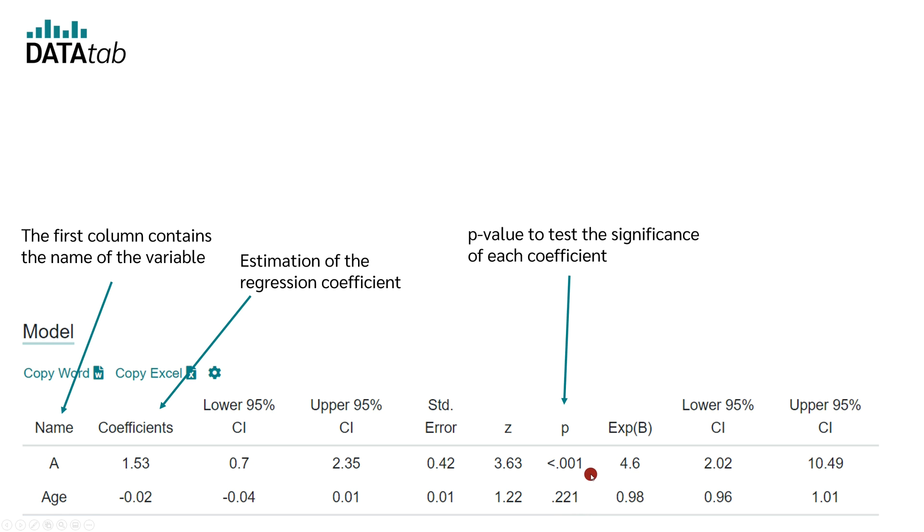So the null hypothesis is, in the population the coefficient is zero. Let's say, as usual, that we set our significance level at 5%. Then for p-values less than 5%, or 0.05, the null hypothesis is rejected and the coefficient is significantly different from zero.